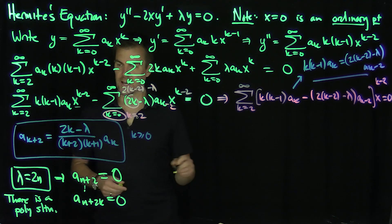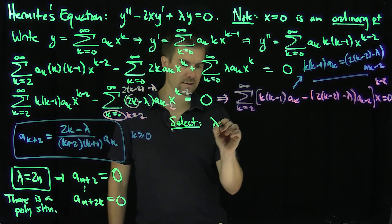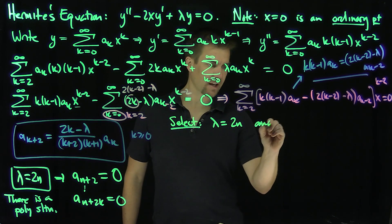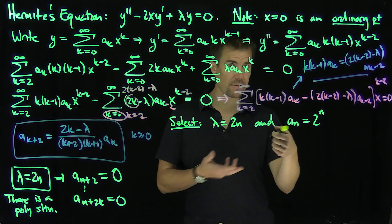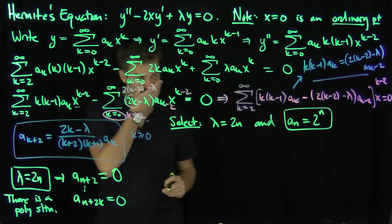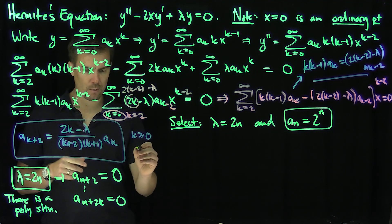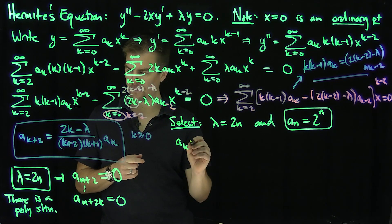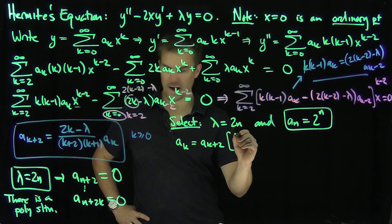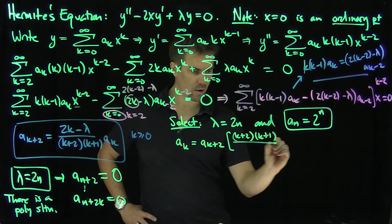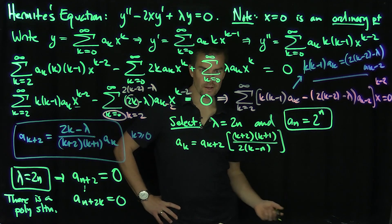Working under the assumption that lambda equals 2n, I select the leading coefficient a_n equal to 2 to the power n. Flipping the recursion relationship, a_k equals a_{k+2} times (k plus 2)(k plus 1) divided by (2k minus lambda), equivalently (2k minus 2n). So a_{n minus 2} equals 2 to the n times n times n minus 1, divided by 2 times negative 2.